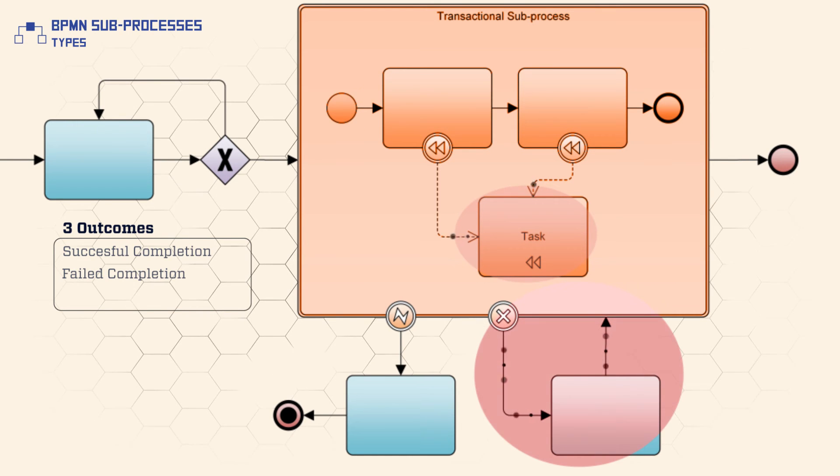This occurs if any of the predetermined criteria of failure are met or if an abort message is received. In both cases, the non-normal flow is executed, meaning that none of the tasks in the transaction are completed.